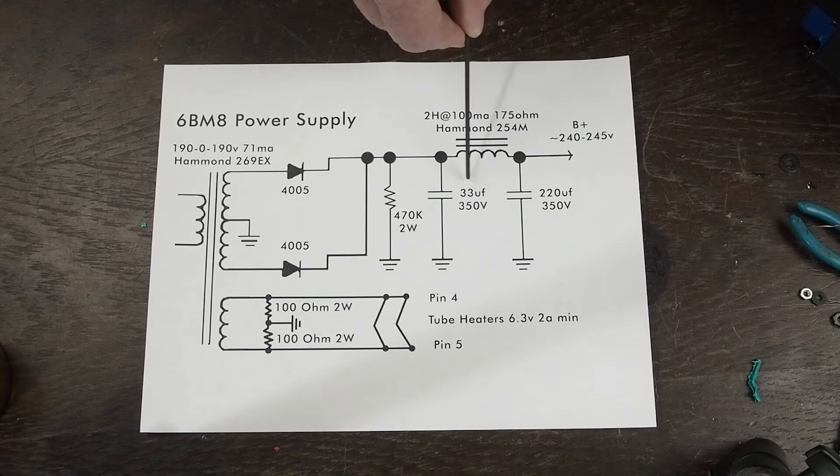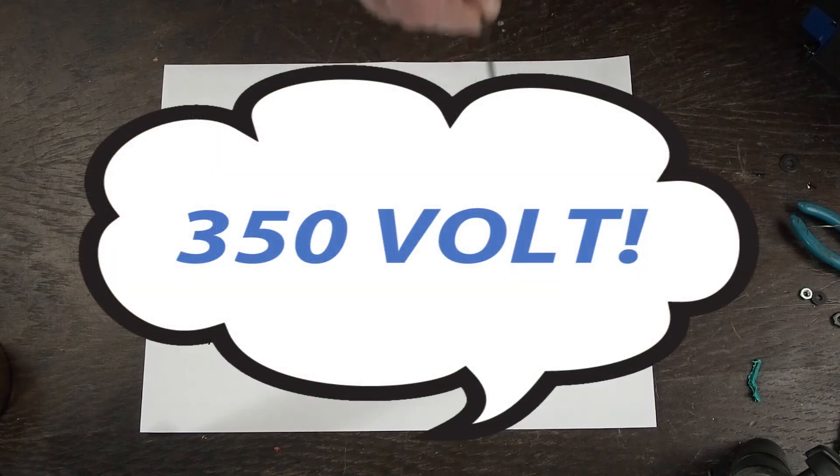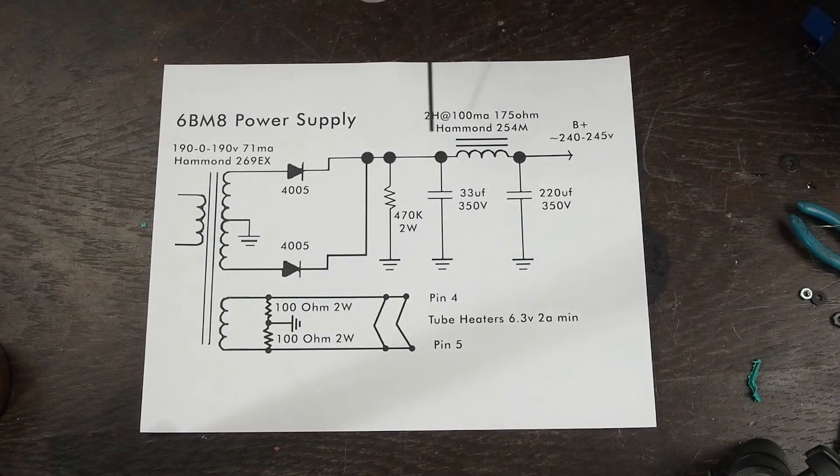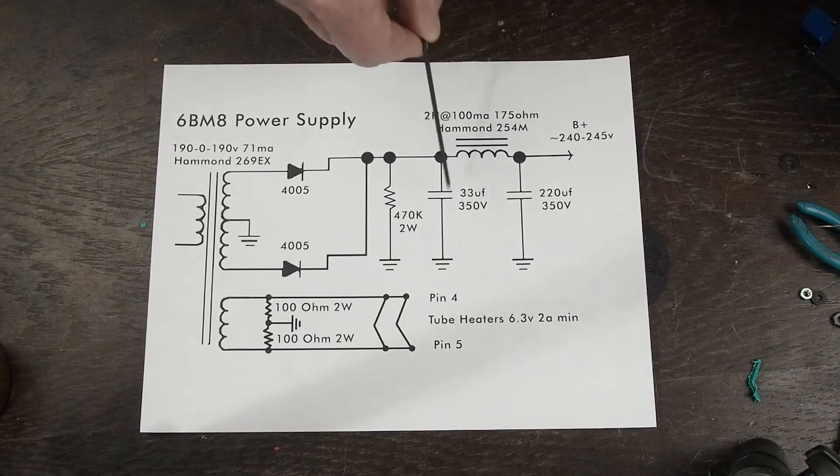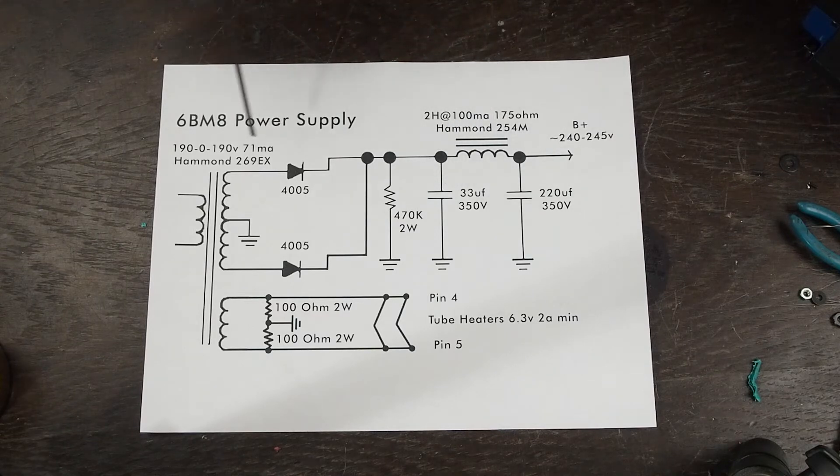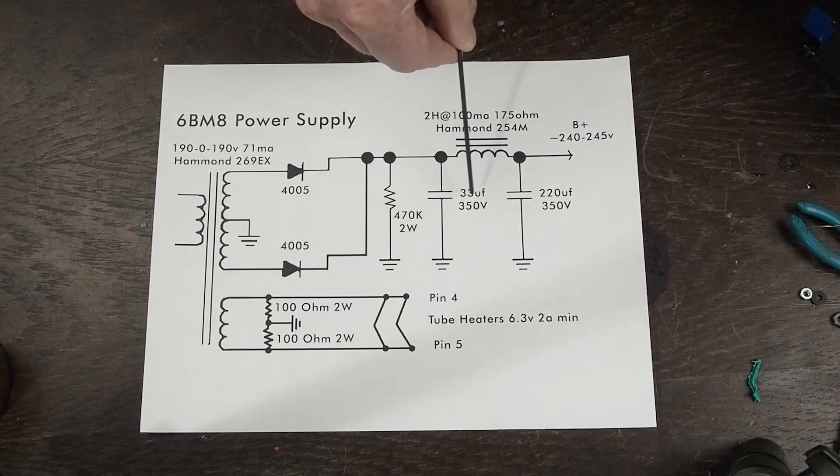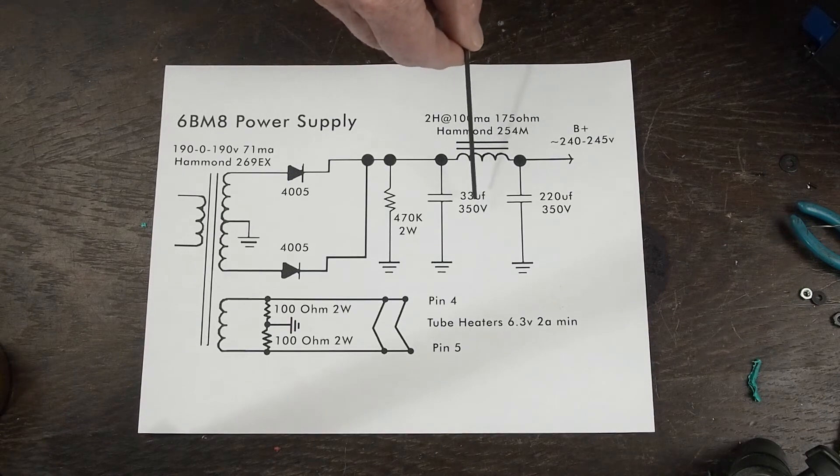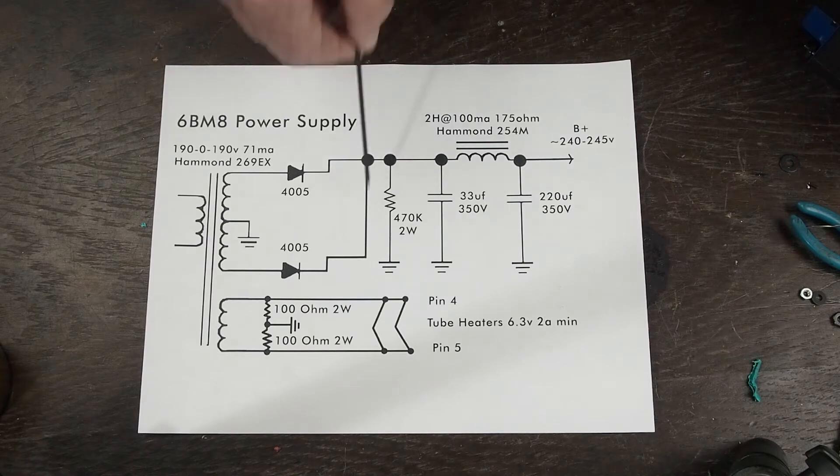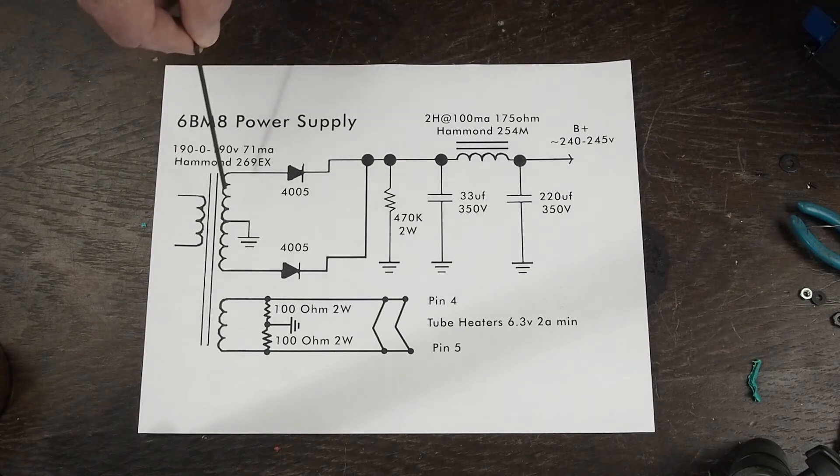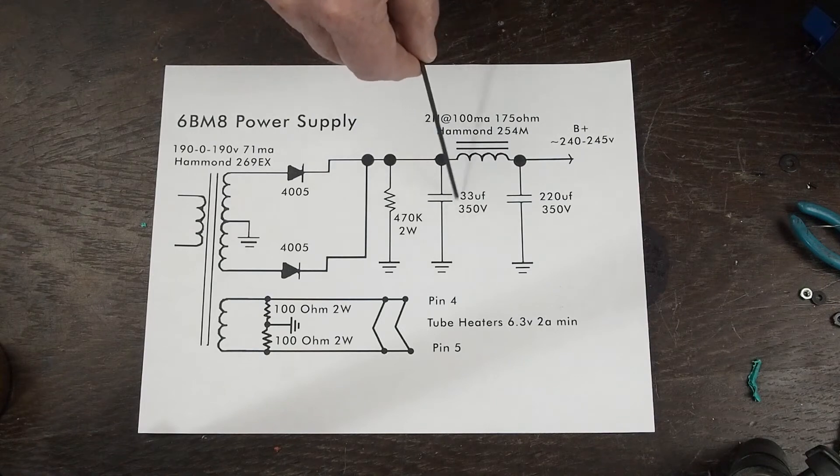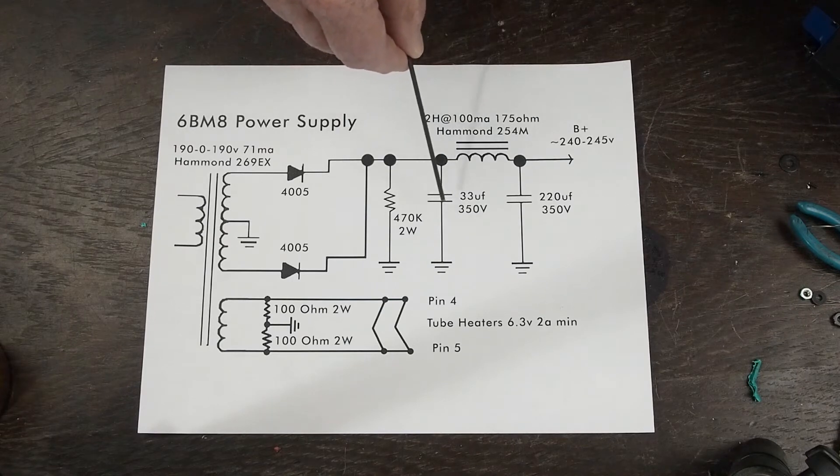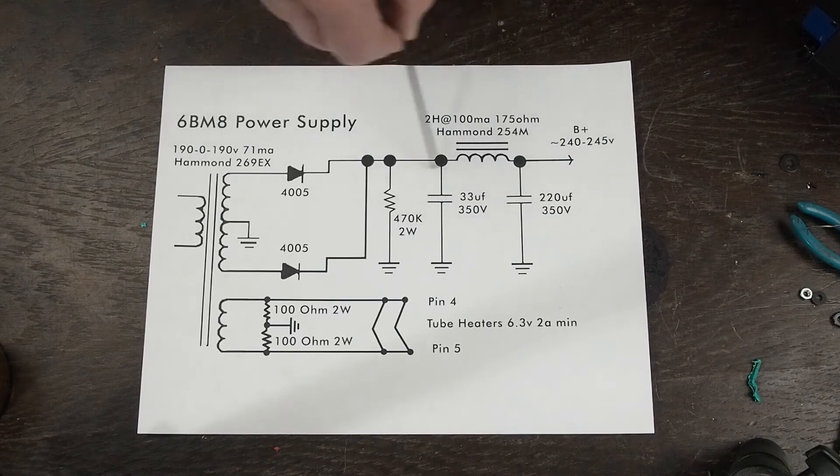So the next piece is this 33UF 330 volt capacitor. And the reason we're going with 330 volt is the voltage will probably spike on turn on and I want to make sure that we don't have a capacitor blowing up when we power up the amp. We're using a fairly small capacitor for this first one for a reason. We don't want to put a really large capacitor here right after these diodes because when you fire up the amp, there's going to be a huge in-rush of current trying to charge up this capacitor. And the larger this is, the bigger that surge is going to be. So we're going to use a fairly small one here.